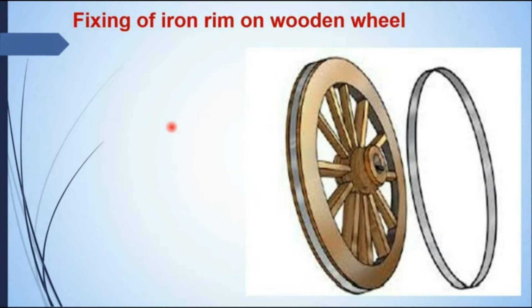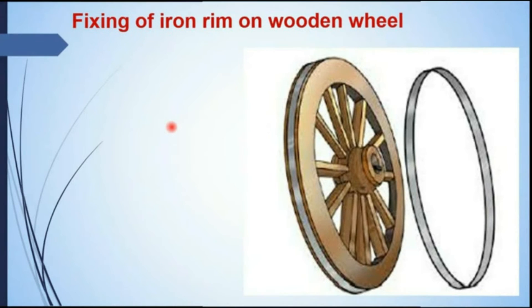When the temperature of the iron rim is reduced, it regains its original dimension, and by this way the iron rim gets tightly fixed around the wooden wheel.